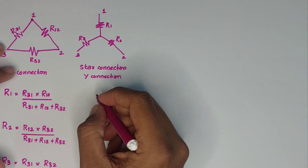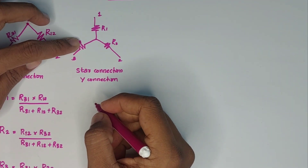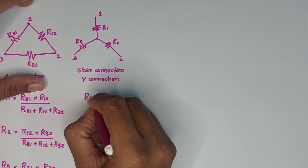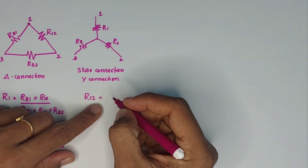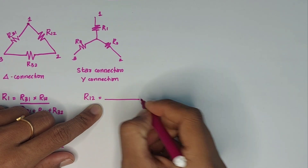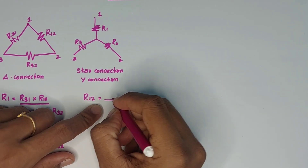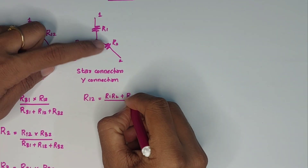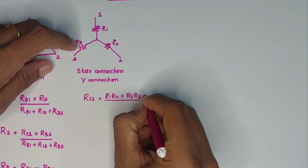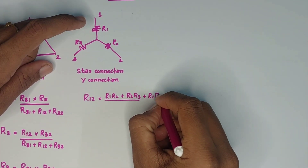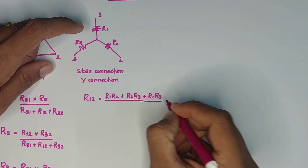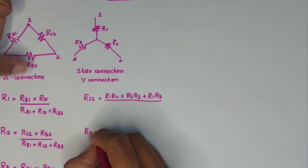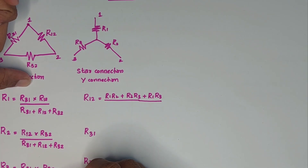We can see that R1, R2, R3, and R32 relate to R12. The numerator here is R1 into R2 plus R2 into R3 plus R1 into R3. This is the numerator for the star-to-delta conversion formulas.